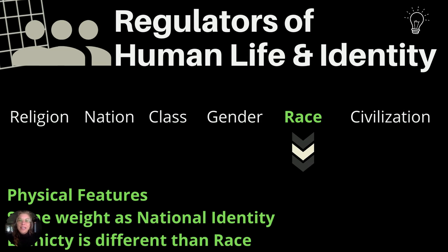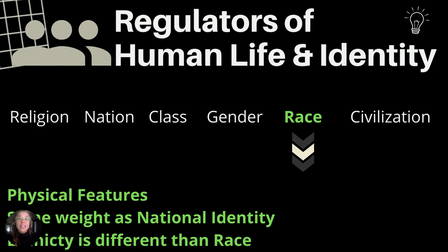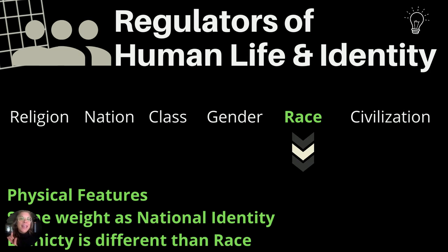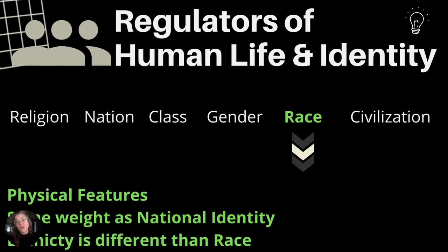The next regulator is race. Racial identity refers to physical features, such as skin color, and it holds the same weight as national identity as a regulator. Race can be evaluated from both a biological and/or socio-historic perspective, and there is no gene to determine race. Also note that ethnicity is different from race, and ethnicity is defined by a shared heritage, like family names, geography, customs, and/or language.